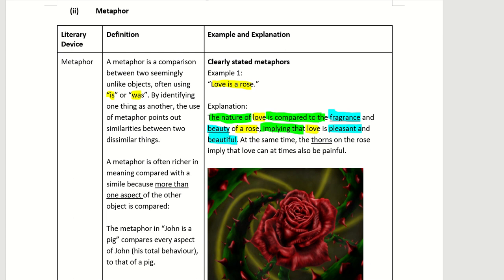What is another interpretation of 'love is a rose'? You can craft it this way: 'At the same time, the thorns on a rose imply that love can at times also be painful.' This is the explanation of the metaphor 'love is a rose.'